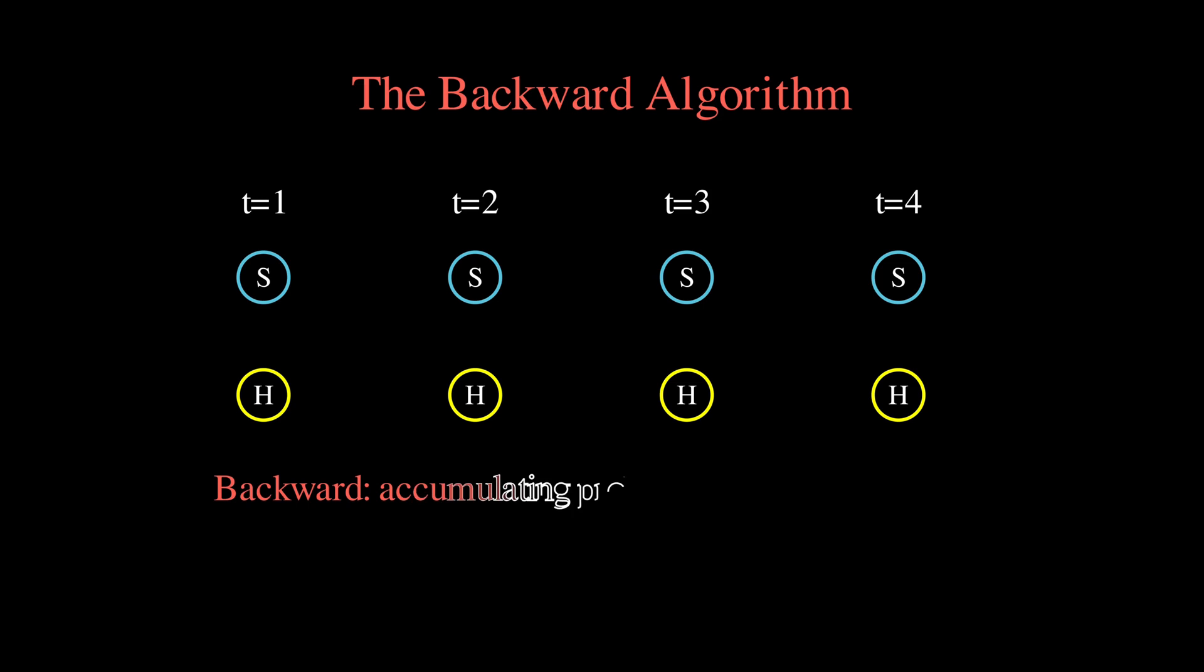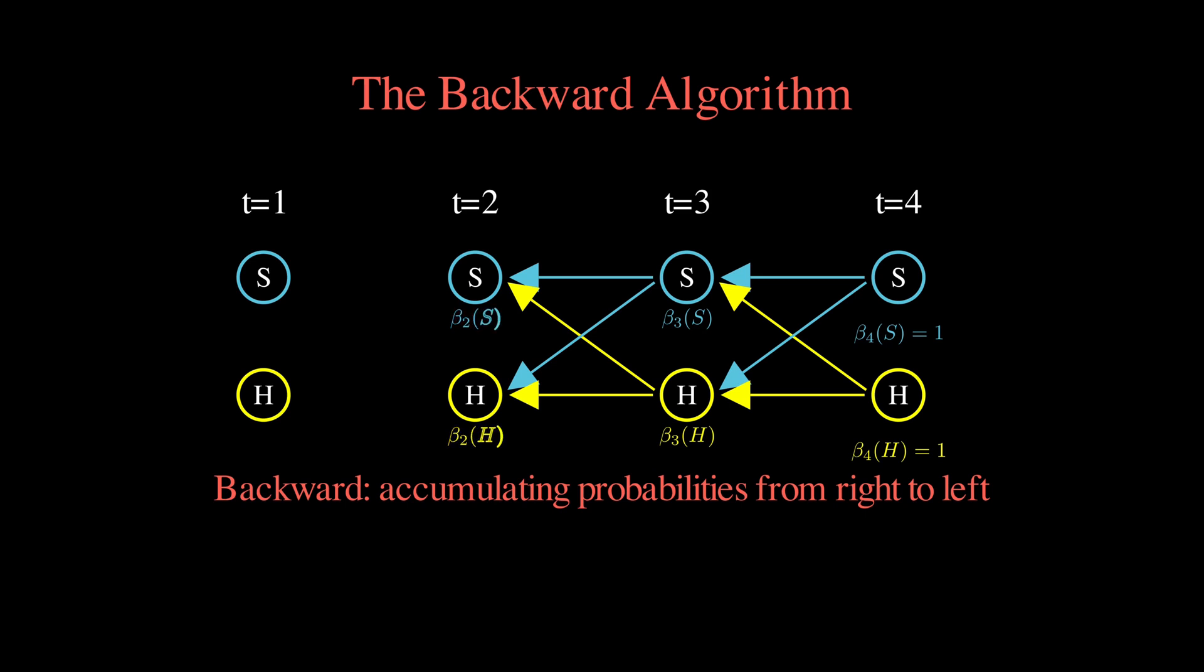The initialization is simple, beta equals 1 for all states because there are no future observations to consider. Then we work backwards by considering all the states we could transition to next, multiplying by the appropriate transition and emission probabilities, and summing them up.